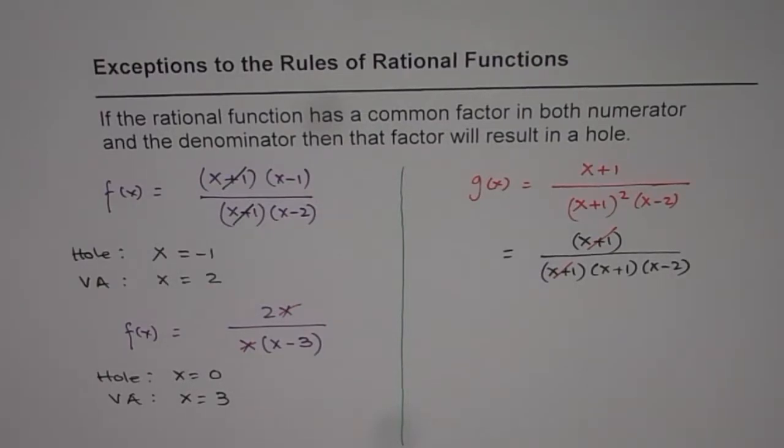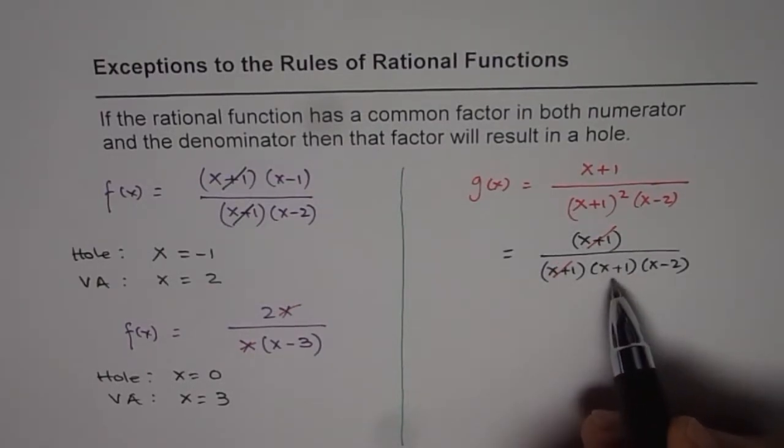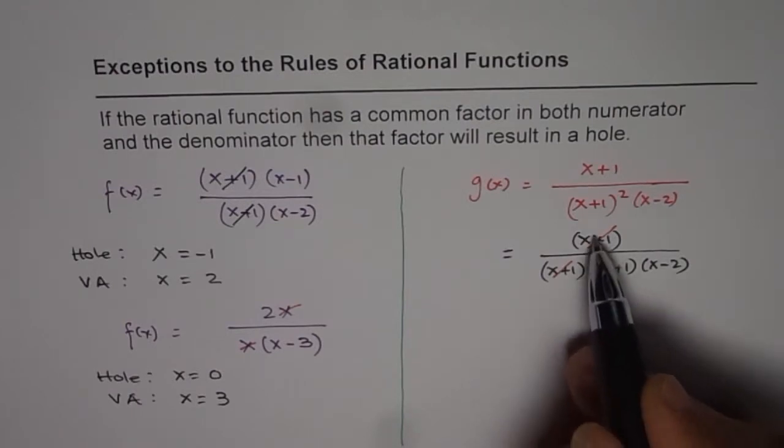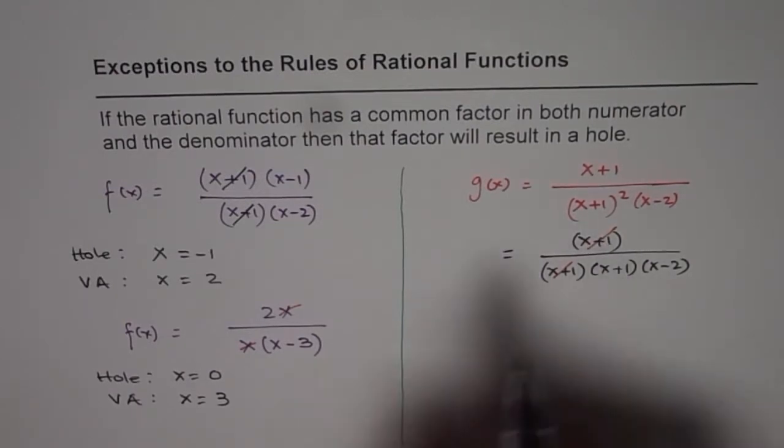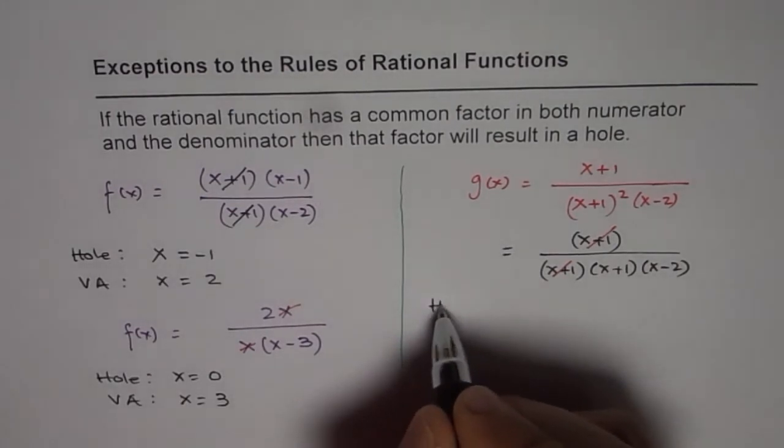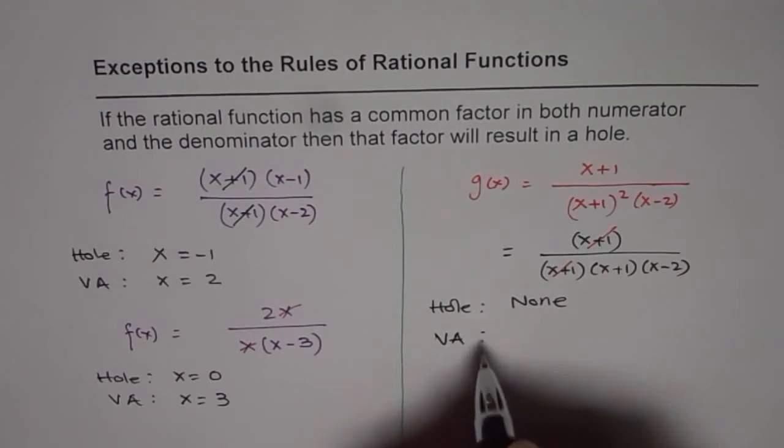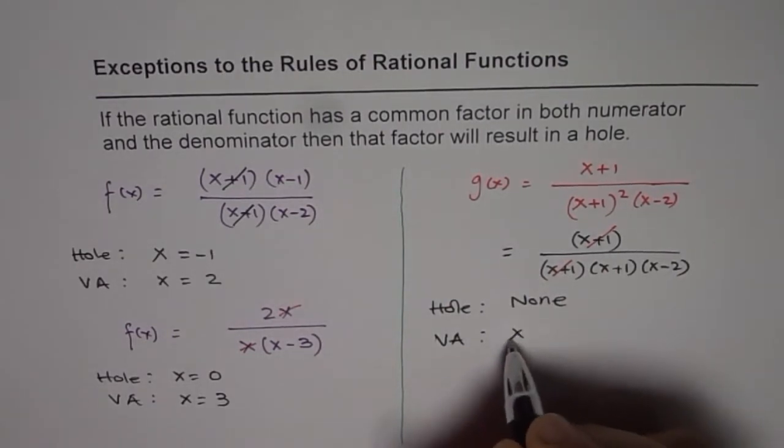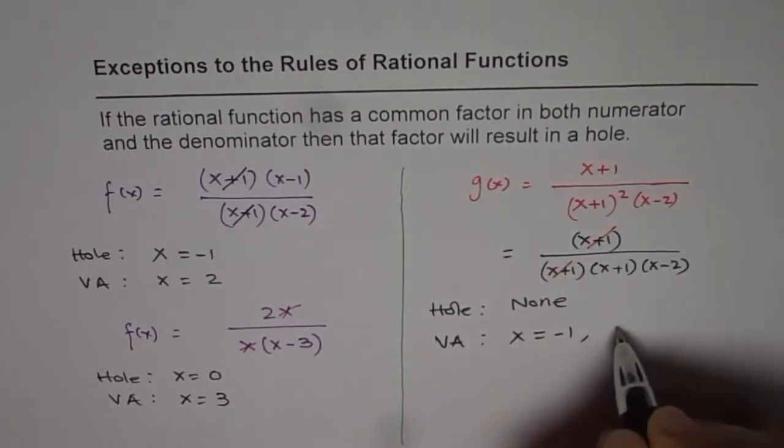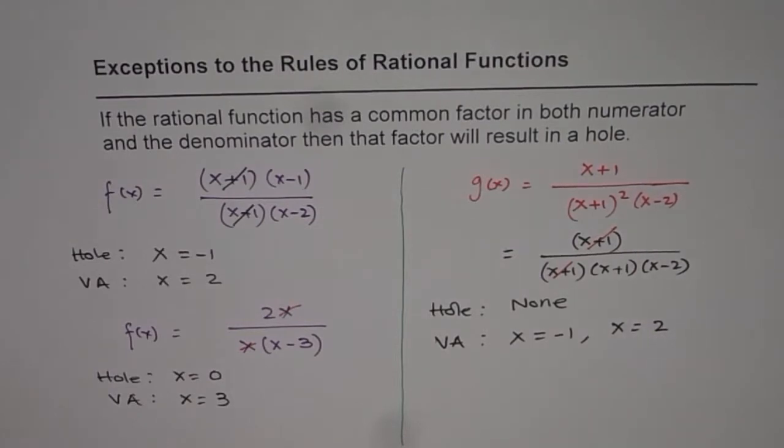It doesn't. Reason is very simple. We still have one more factor in the denominator of the same kind. So therefore in this particular case, as far as the hole is concerned, we have none. But as far as vertical asymptote is concerned, we have two. One is at x equals minus 1. The other one is x equals 2.